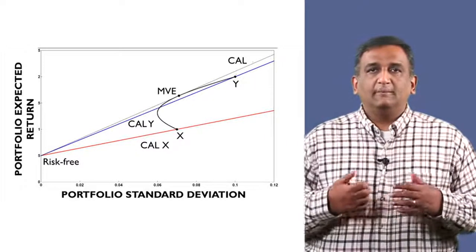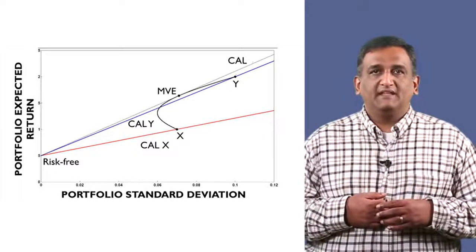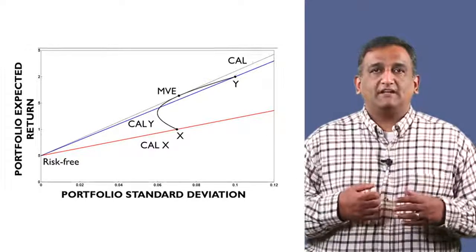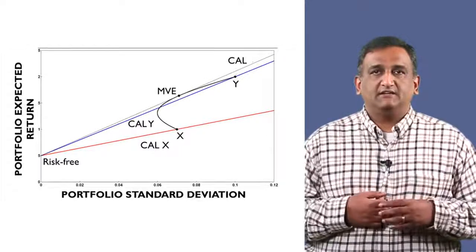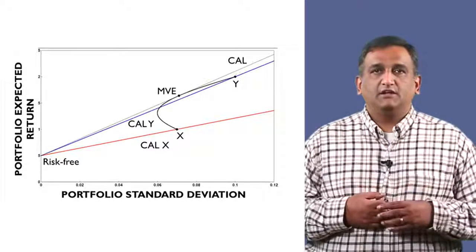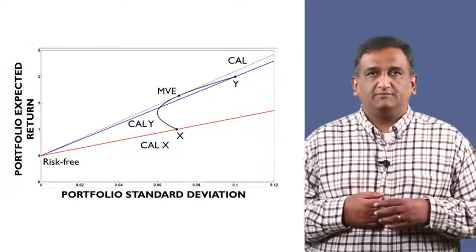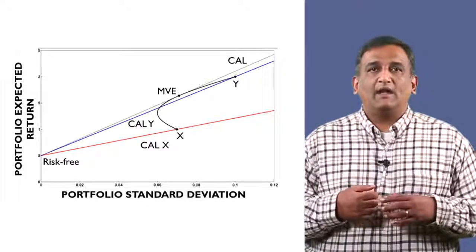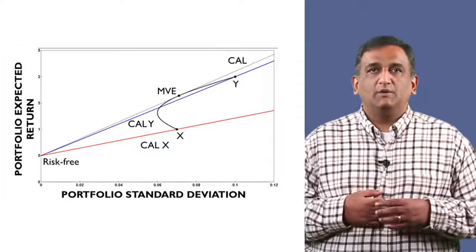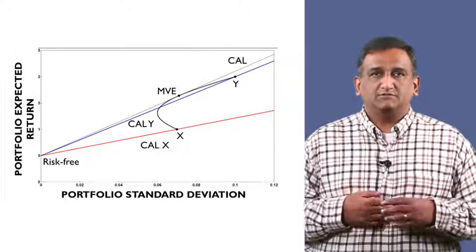The mean variance efficient portfolio is at the point of tangency of the capital allocation line from the risk-free asset to the mean variance frontier. It provides the maximum reward-to-risk ratio, which is also called the Sharpe ratio.